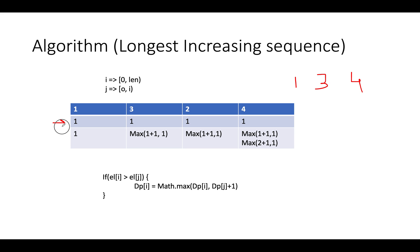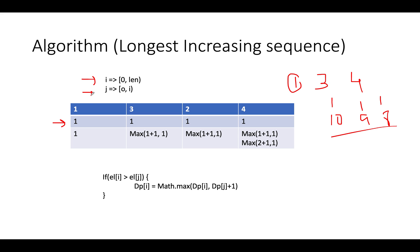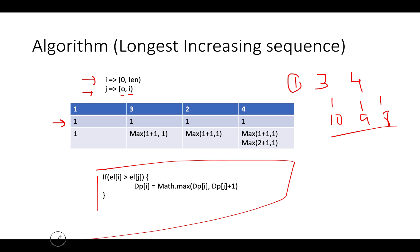We'll initialize the dp array with 1, because if you treat each element independently, the longest increasing subsequence is of length 1. For example, if we have 10, 9, and 8, the length would be 1 for any of them independently. We'll use two loops: one starting from i=0 going up to the length, and another loop starting from index 0 going up to i.